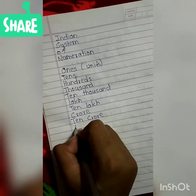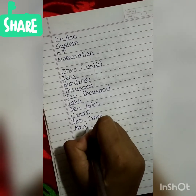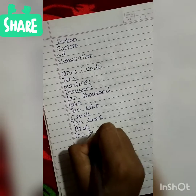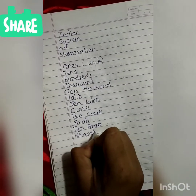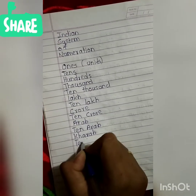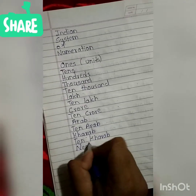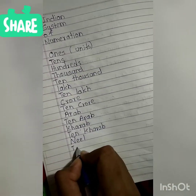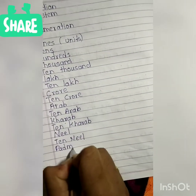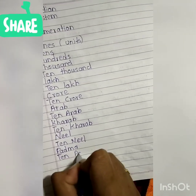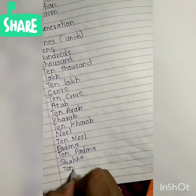Most of you might not know that after crore there is Arap, ten Arap, Kharap, ten Kharap, Neel, ten Neel, Padma, ten Padma, Shankha, and ten Shankha.